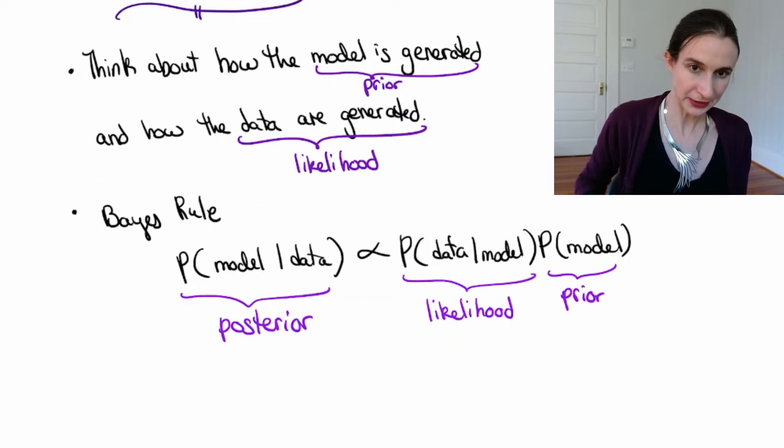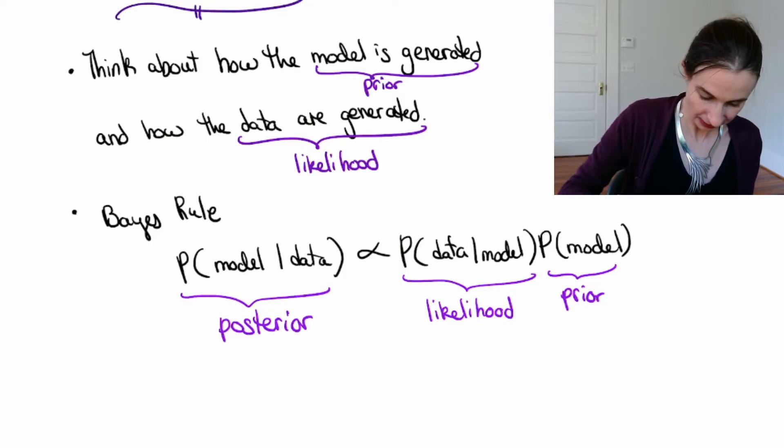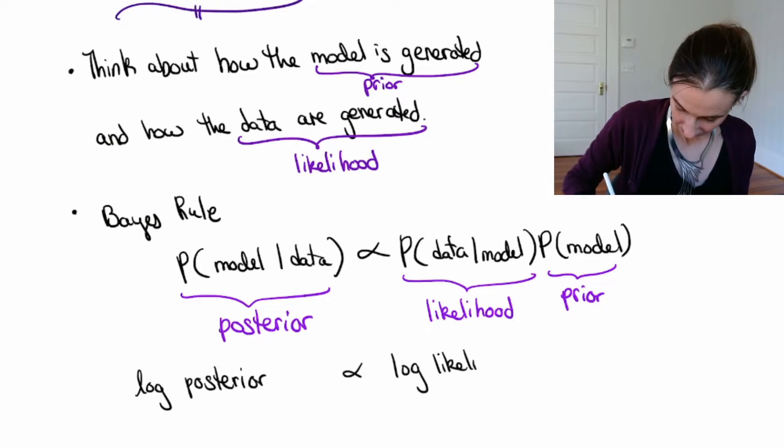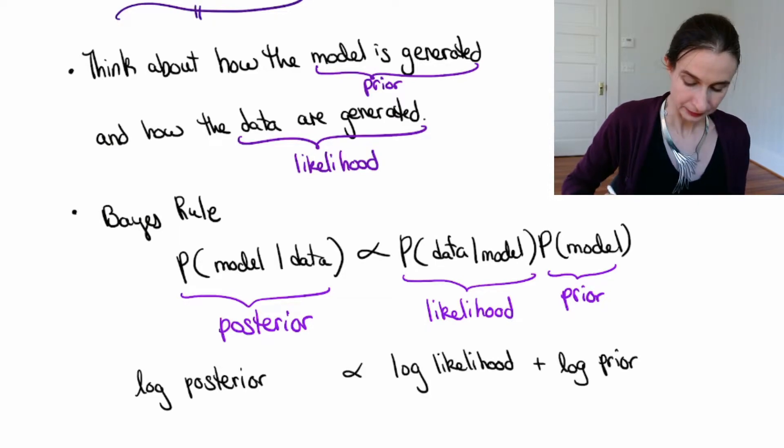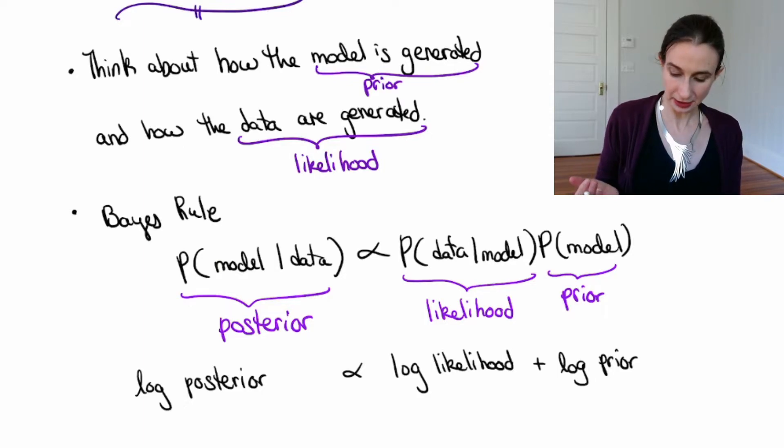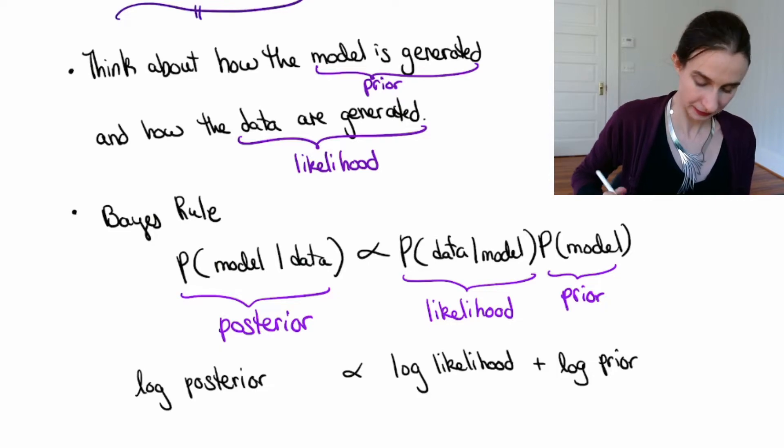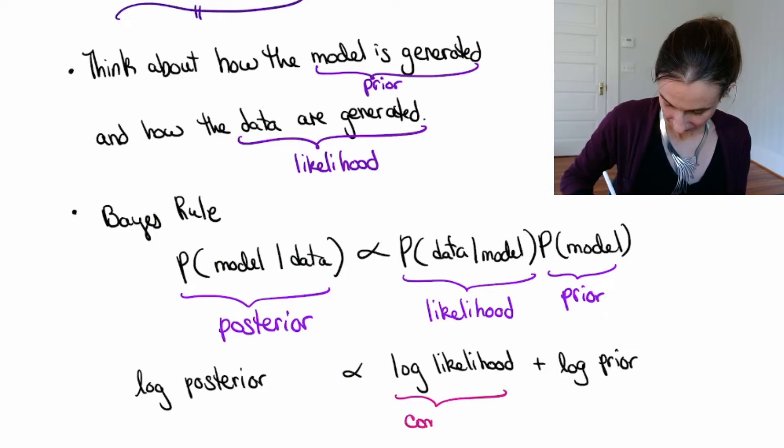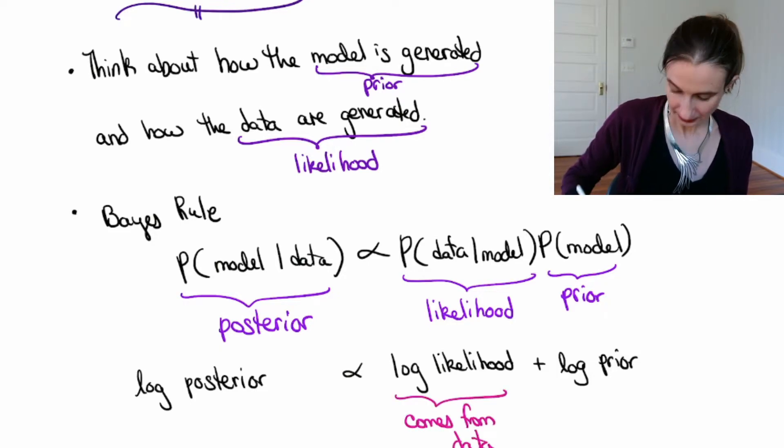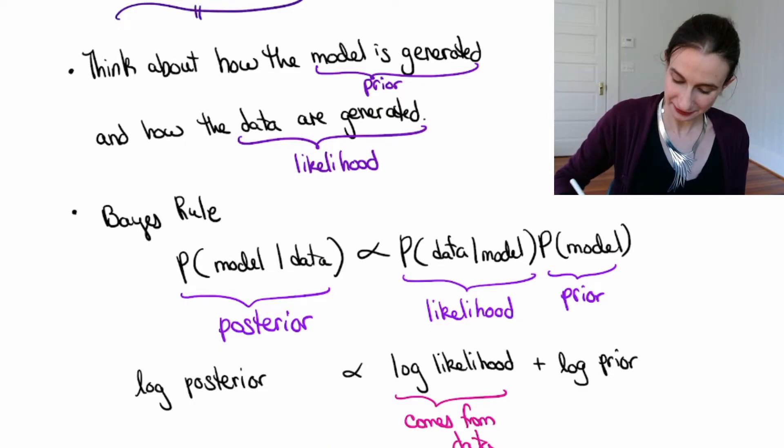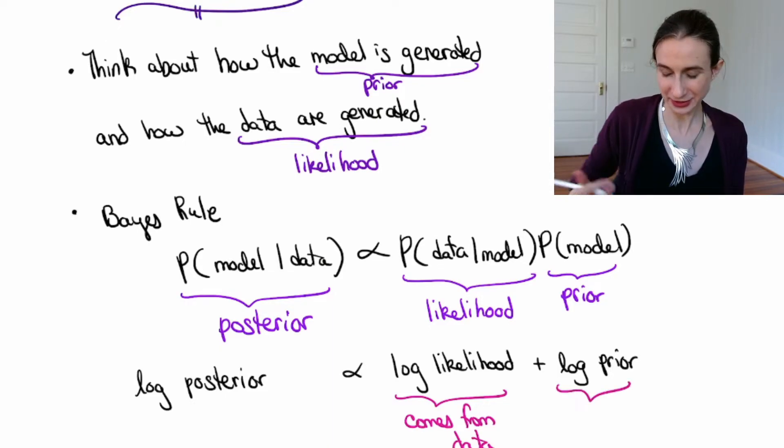Okay, so if we're comfortable with this, we can take the log of the posterior. Let's find out what happens. So we have the log posterior is proportional to the log likelihood plus the log prior. So the log likelihood comes from data, and the log prior comes from belief about what your model is going to look like.